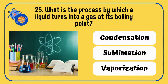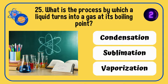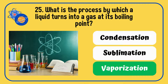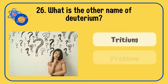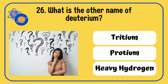What is the process by which a liquid turns into a gas at its boiling point? What is the other name of deuterium — tritium, protium, or heavy hydrogen?